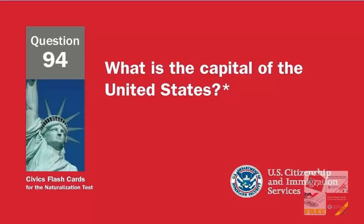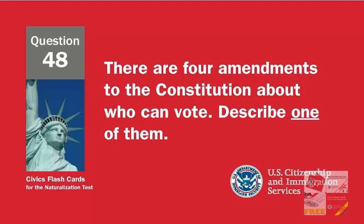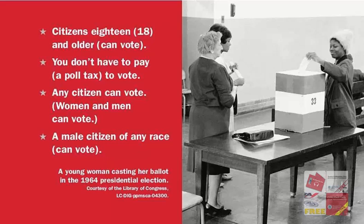There are four amendments to the Constitution about who can vote. Describe one of them. Citizens 18 and older can vote. You don't have to pay a poll tax to vote. Any citizen can vote. Women and men can vote. A male citizen of any race can vote.